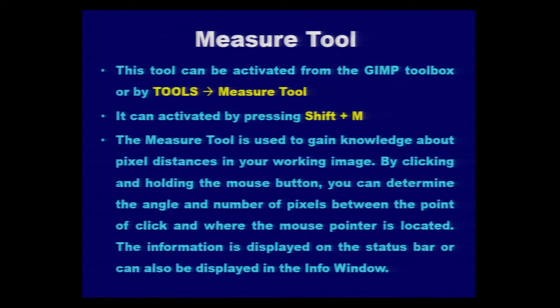The last tool in this session is the measure tool. This tool can be activated from the GIMP toolbox, and you will find it separately in the tools menu — it is not under the paint tools category. You can use the measure tool for measuring distances, and it can also be activated by pressing Shift and M together.